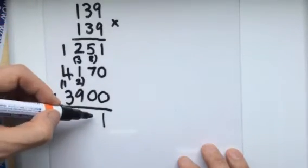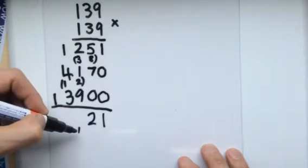So, 5, 10s add 7, 10s is 12, 10s. Again, we're going to carry.